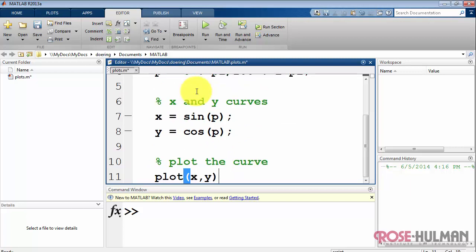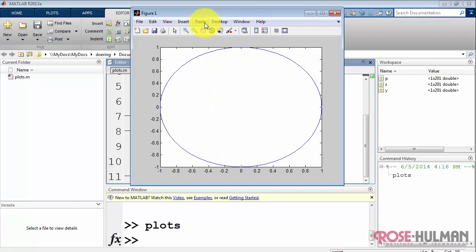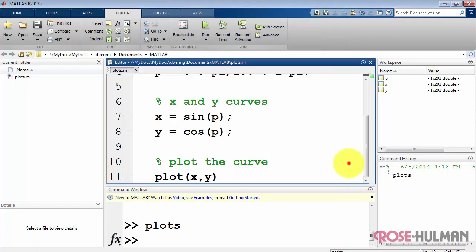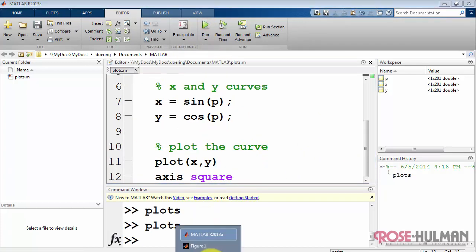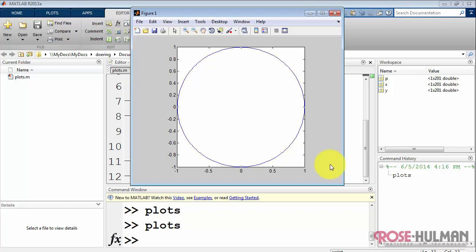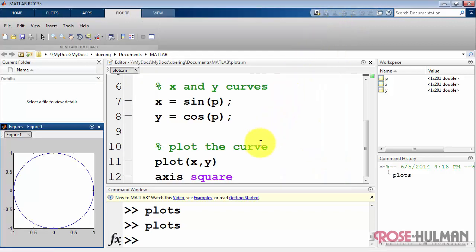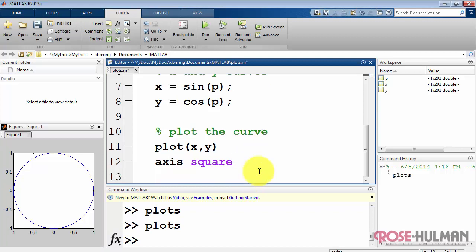The MATLAB function is plot. We give it the independent variable first. That's x, and then the dependent variable. Let me say axis square so that we've got the same scaling on both axes. And we see that it's plotted a circle. I'm going to dock the figure so we can always see that figure as we make updates to the script.